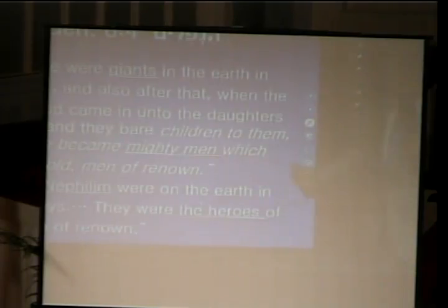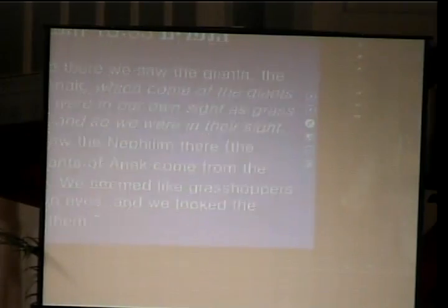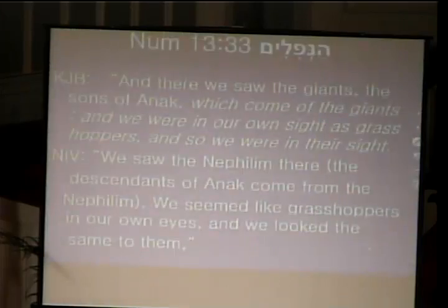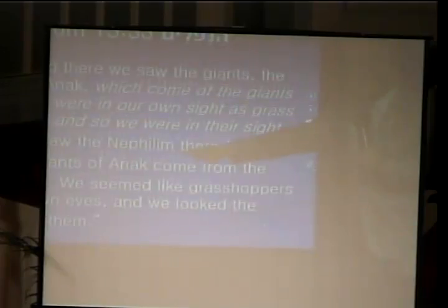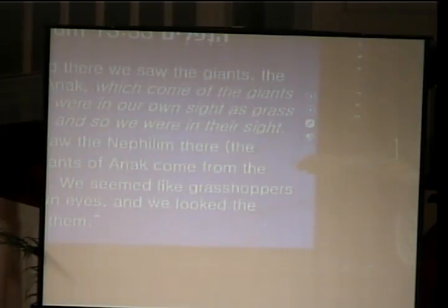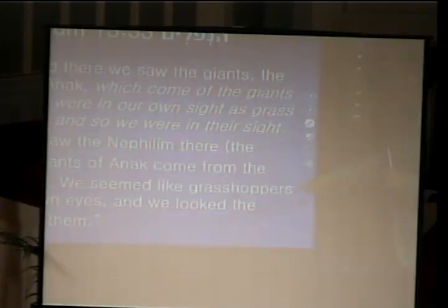Nephilim is a kind of 'fallen one.' The King James Bible says they were giants, talking about the heroes of old, men of renown. According to Numbers 13:33, the King James Bible says there would be giants — the sons of Anak. But the NIV does not translate the word, saying 'They are descendants of Anak, come from the Nephilim,' which is very unclear.